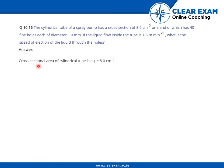So, the cross-sectional area of a cylindrical tube which is represented by a1 is 8 cm². Now, the total area of the 40 fine holes is, if it is noted by a2, so a2 becomes 40 into pi d² by 4. If we put in the value of d, we can get the total area of the 40 fine holes.